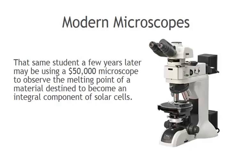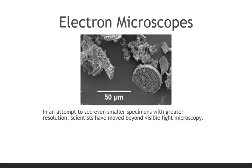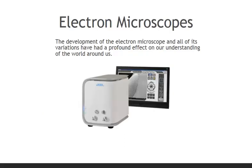That same student, a few years later, may be using a $50,000 microscope to observe the melting point of a material destined to become an integral component of solar cells. Improved manufacturing techniques have made the microscope an affordable and valuable tool in many industrial and scientific endeavors. In an attempt to see even smaller specimens with greater resolution, scientists have moved beyond visible light microscopy. The development of the electron microscope and all of its variations have had a profound effect on our understanding of the world around us.